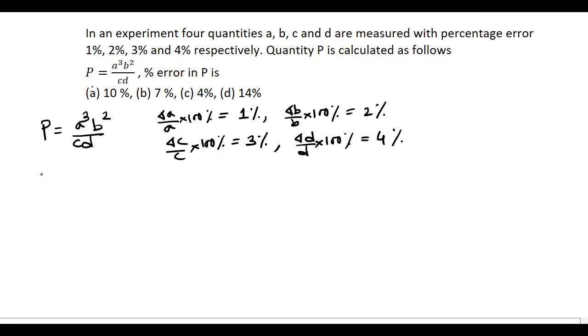We have to calculate the error in P. Now if we take the logarithm on both sides of this equation, ln of P equals ln A cubed plus ln B squared minus ln C minus ln D, or we can write 3 ln A plus 2 ln B minus ln C minus ln D.